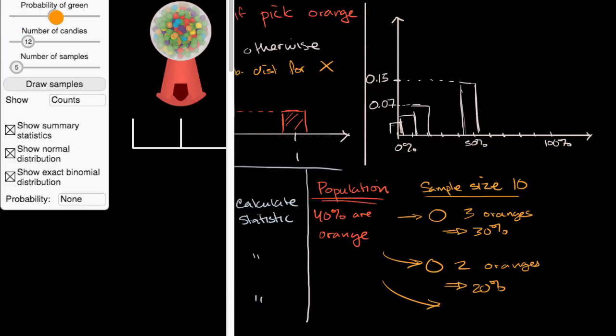So let's say here she's using candies instead of just colored balls, but these candies are essentially colored balls. And so here we can set the population proportion. So let's say that the actual proportion, let's say it's green as opposed to orange here, is 40%. And so let's say in each sample, our sample size is 10. And let's just do one sample first.